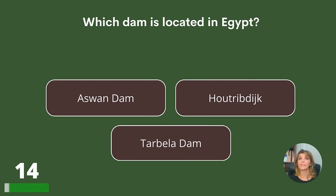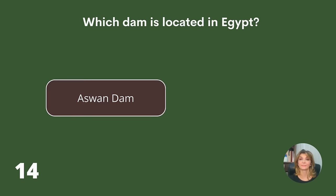Which dam is located in Egypt? Aswan Dam, Tarbela Dam, or another? Answer: Aswan Dam.